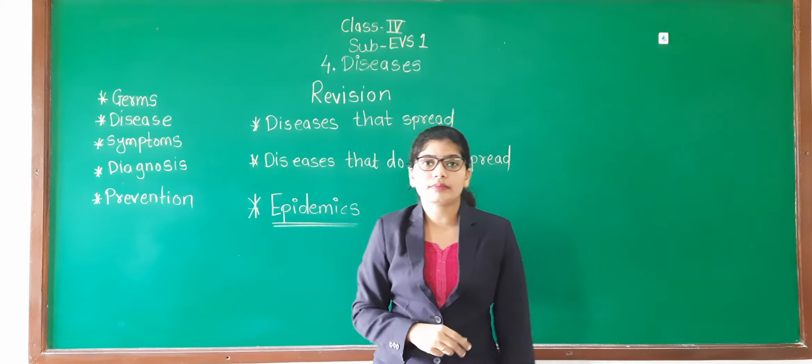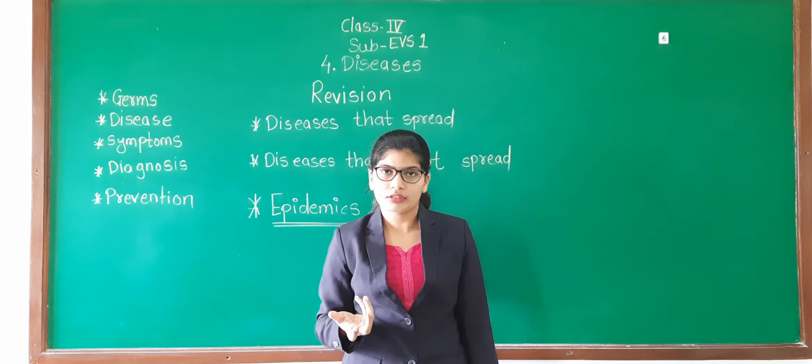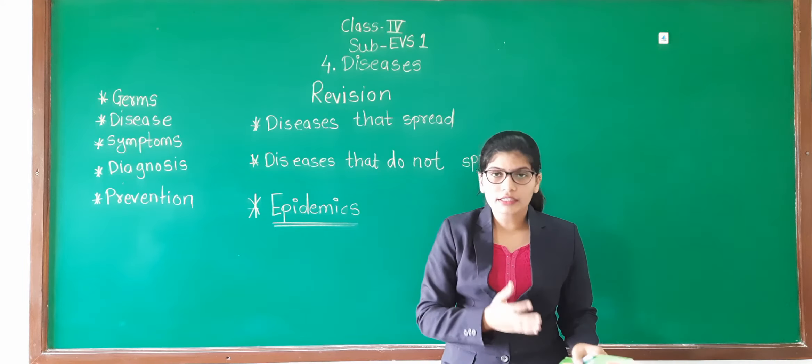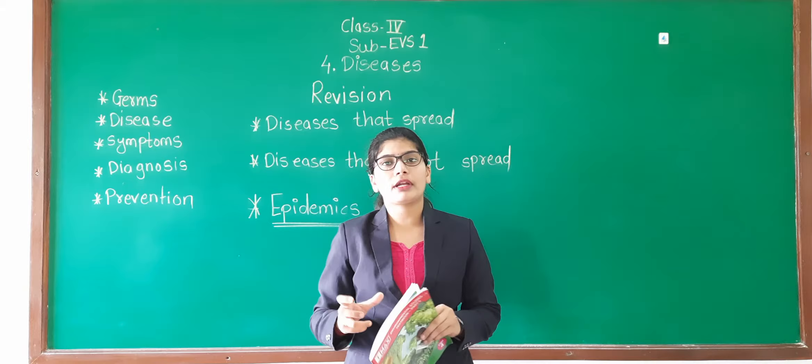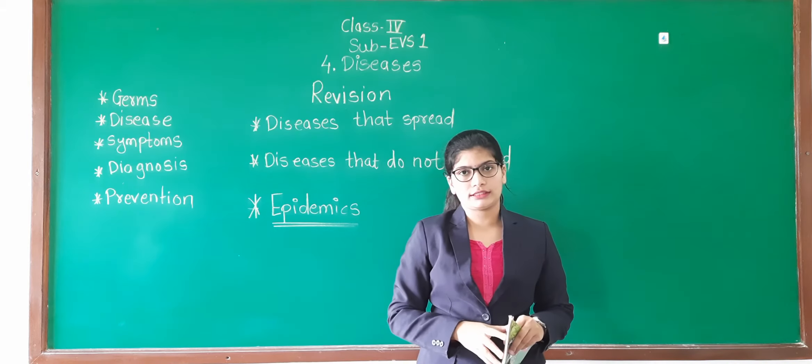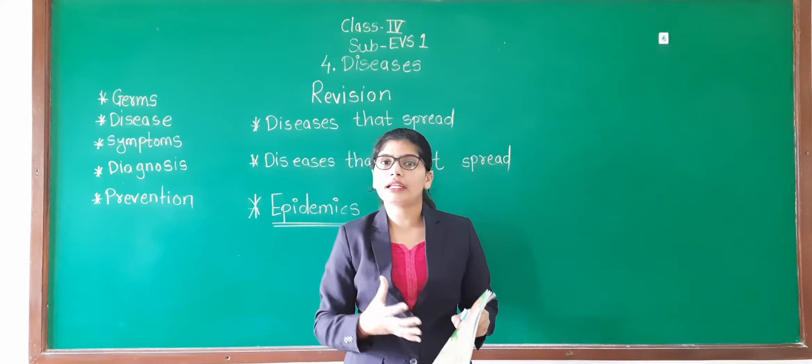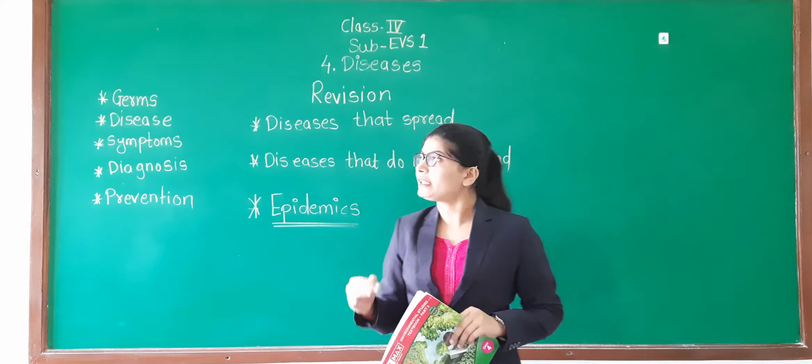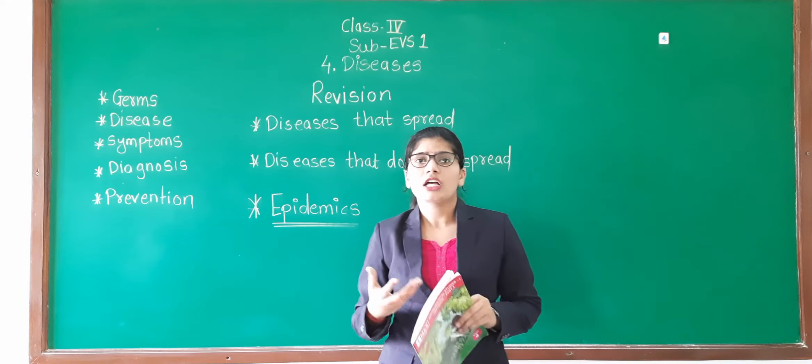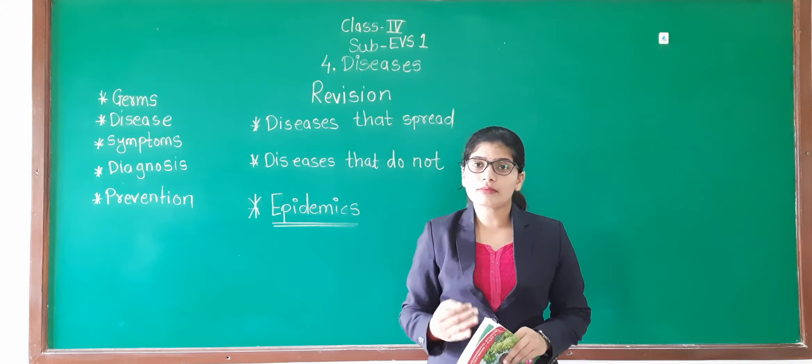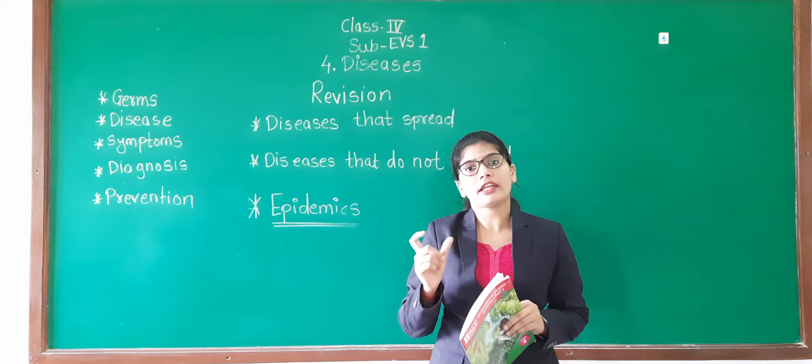So airborne diseases means the diseases which spread by air, like common cold, cough. Then waterborne diseases, diseases that spread through water. Diseases that spread through touch, and diseases that spread through insects like malaria, dengue. So like that we have completed diseases that spread. Many examples we have learned like typhoid, malaria, chikungunya. Then we have learned the symptoms of that disease, and that you have to learn. At least two to three symptoms of each and every disease.